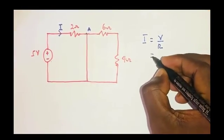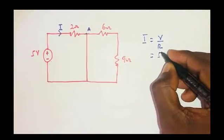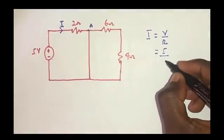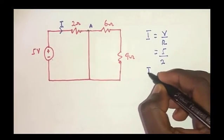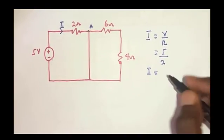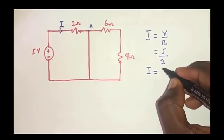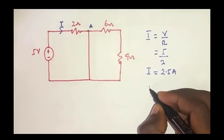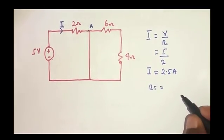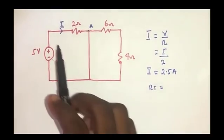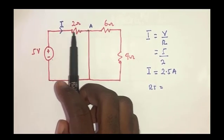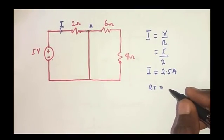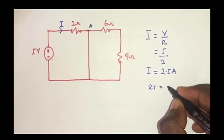With V = 5 volts and R = 2 ohms, the current I = 5/2 = 2.5 amperes. Since current flows only through the 2-ohm resistor, the total resistance for this circuit is equal to 2 ohms.